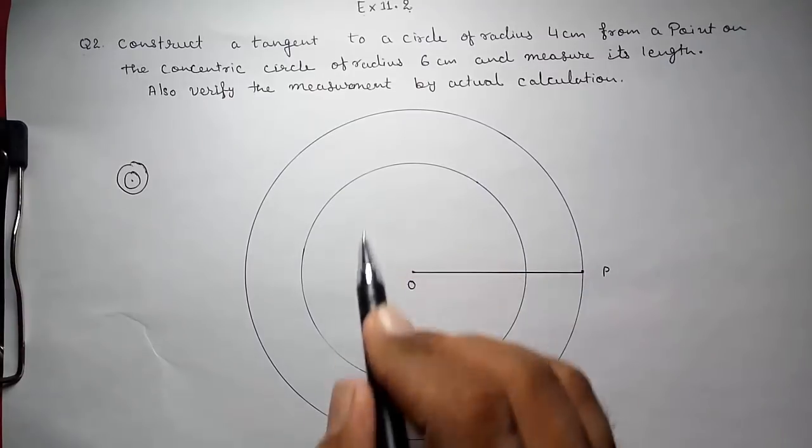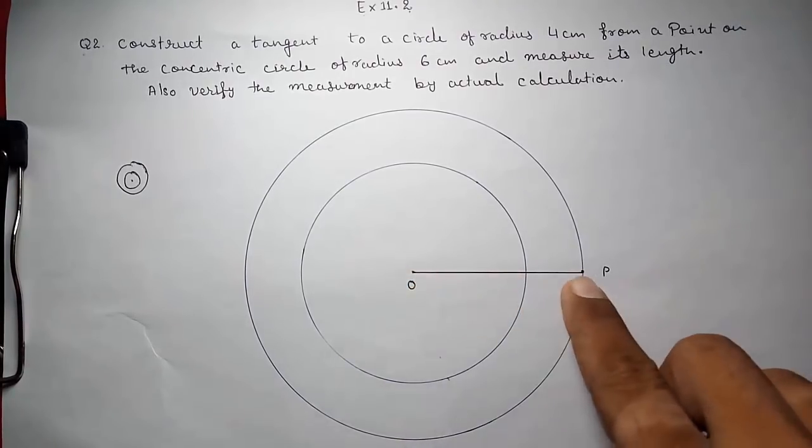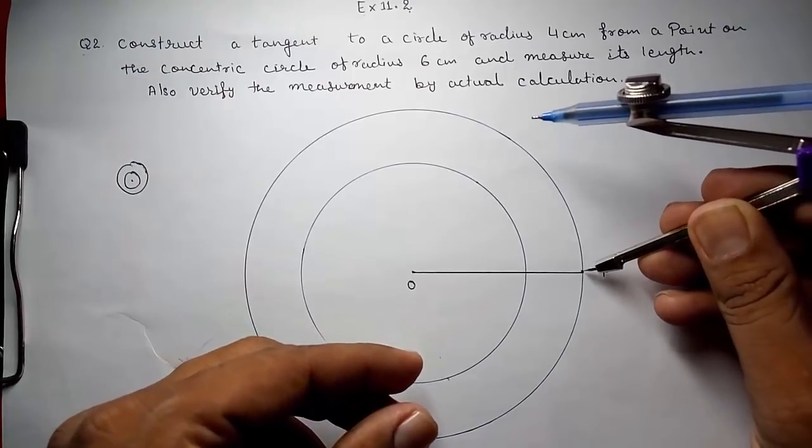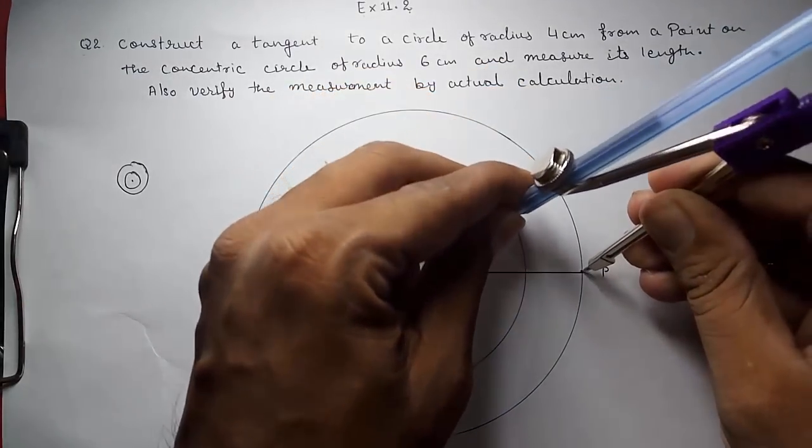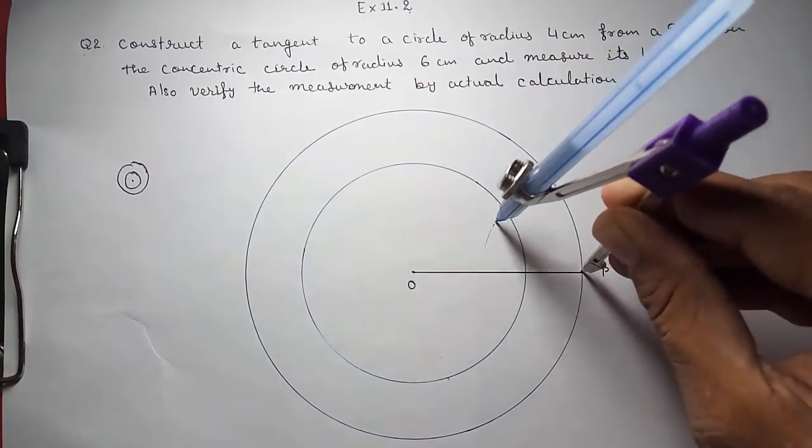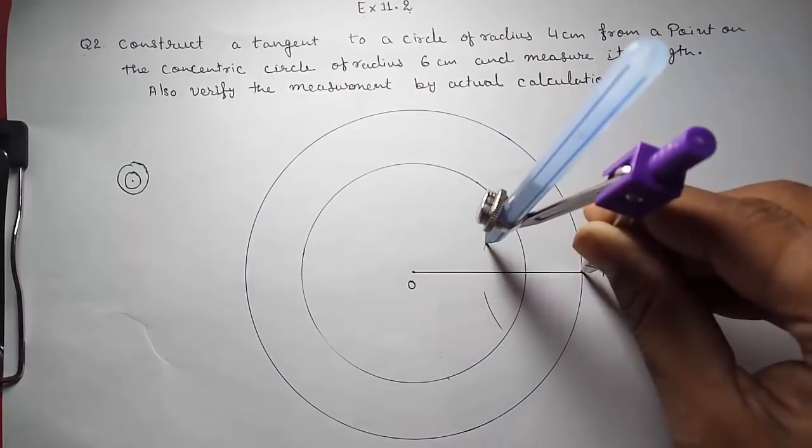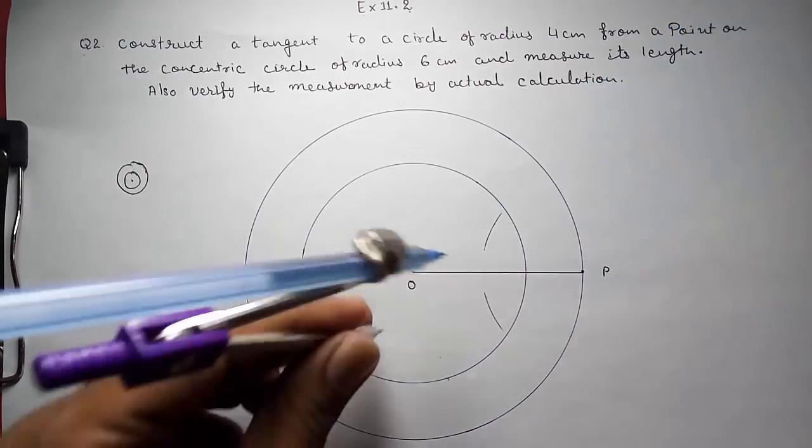Now tangent from this point P on this circle. So what I have to do? First I have to find out the midpoint of O and P. So for that I have to draw a perpendicular bisector. I am drawing 2 arcs on the upper and the lower side.